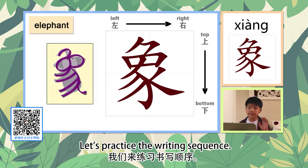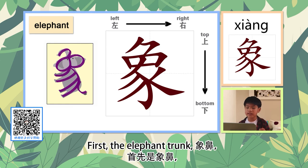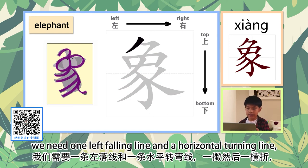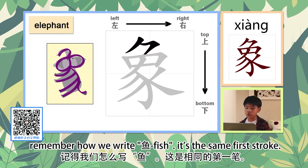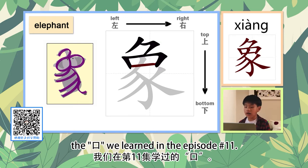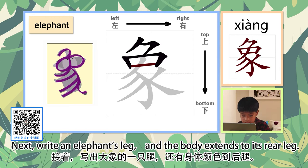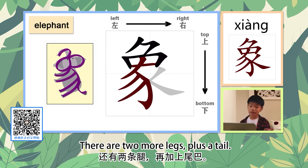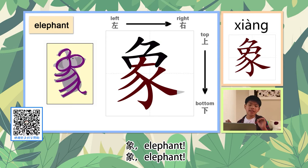Let's practice the writing sequence. First, the elephant's trunk — one left-falling line and a horizontal turning line. Remember how we write 鱼 (fish)? It's the same first stroke. After that, write the character 口 (mouth), which we learned in episode number 11. Next, write an elephant's leg, and the body extends to its rear leg. There are two more legs plus a tail. 象, elephant, 大象, elephant.